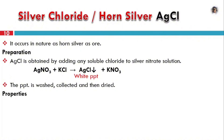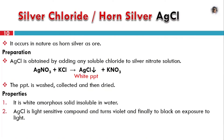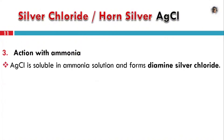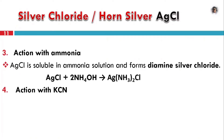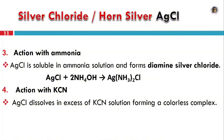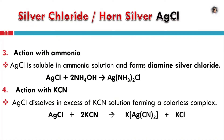AgCl is a white amorphous solid, insoluble in water. Action with light: AgCl is light-sensitive; it turns violet and finally black on exposure to light. AgCl is reduced by sunlight to metallic silver (black). Reaction with ammonia: AgCl dissolves in ammonia solution to form a complex. Reaction with KCN: AgCl reacts with excess KCN to form potassium argentocyanide complex, which is colorless.